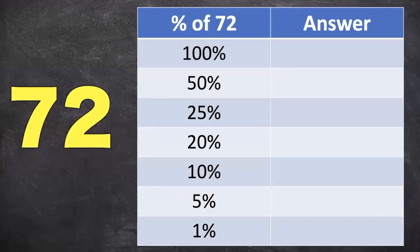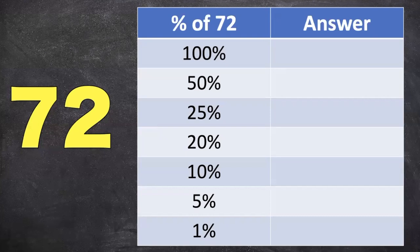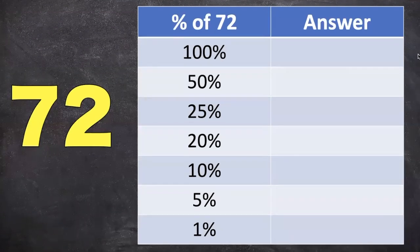Okay guys, so I know the problem said what's 72% of 25, but we're actually going to take the 72 and break that down into percentages. You'll see why at the end of this video. So if you take 100% of 72, that's just the actual number, so 72.